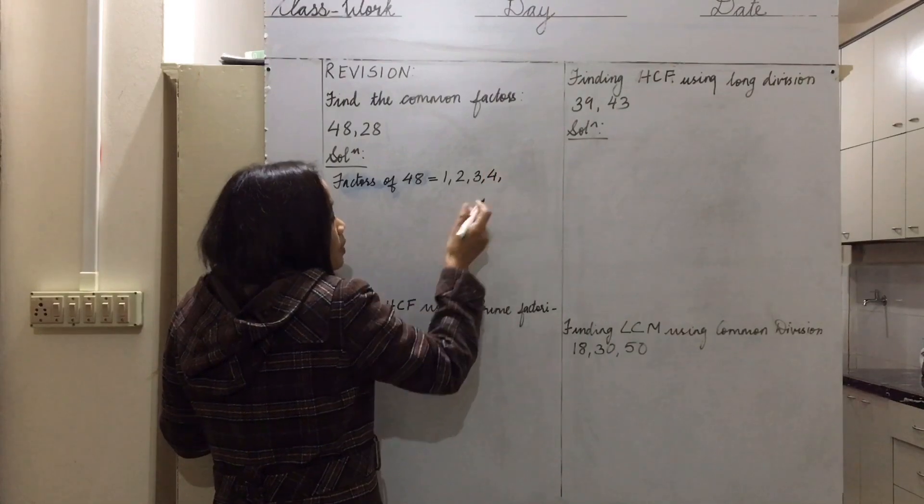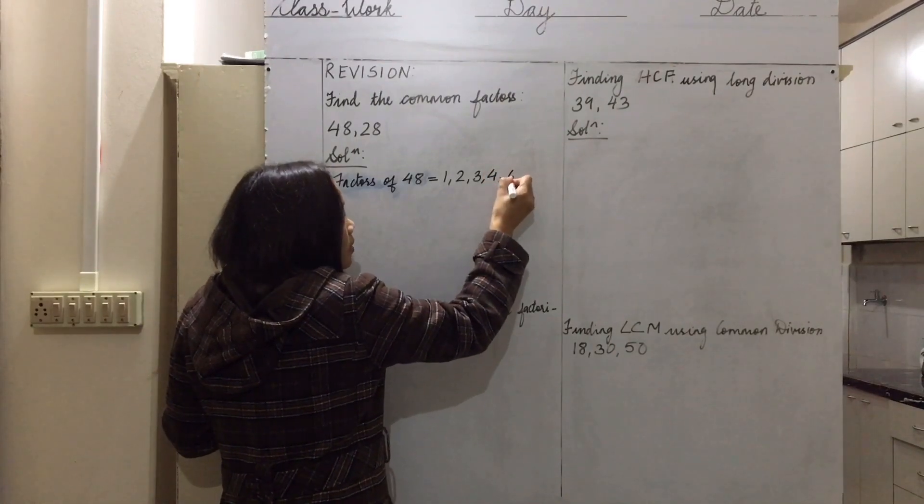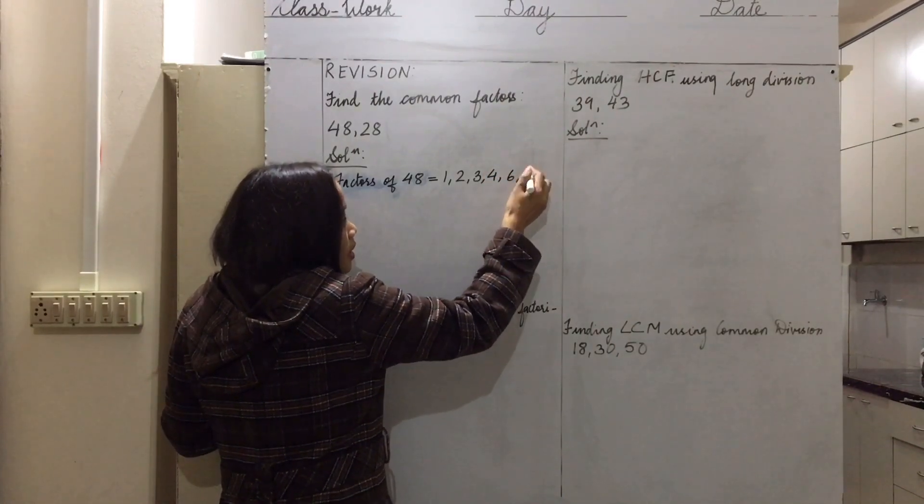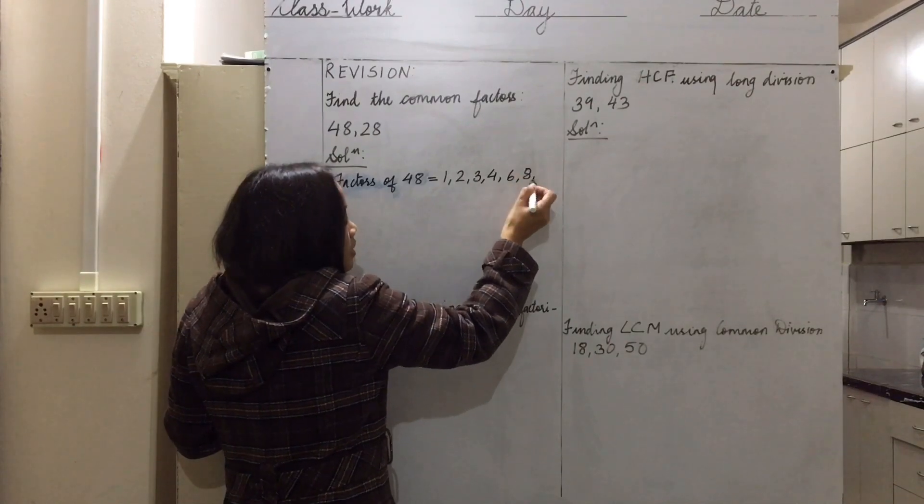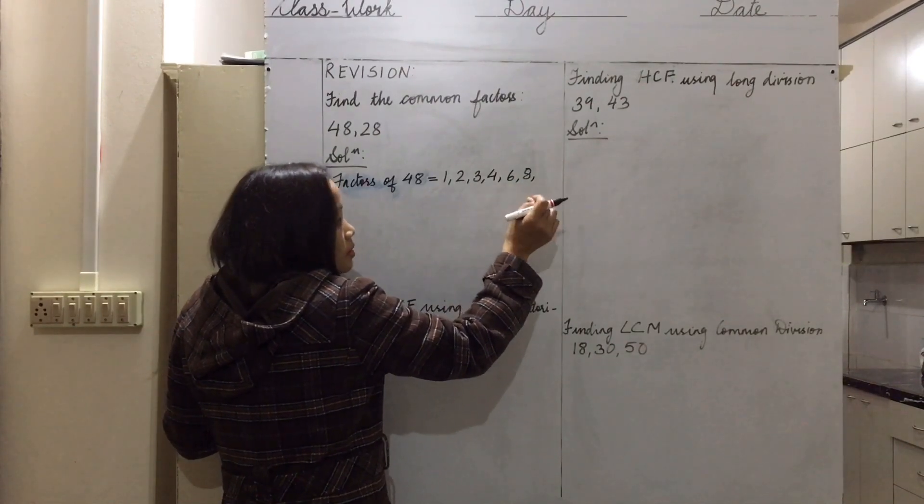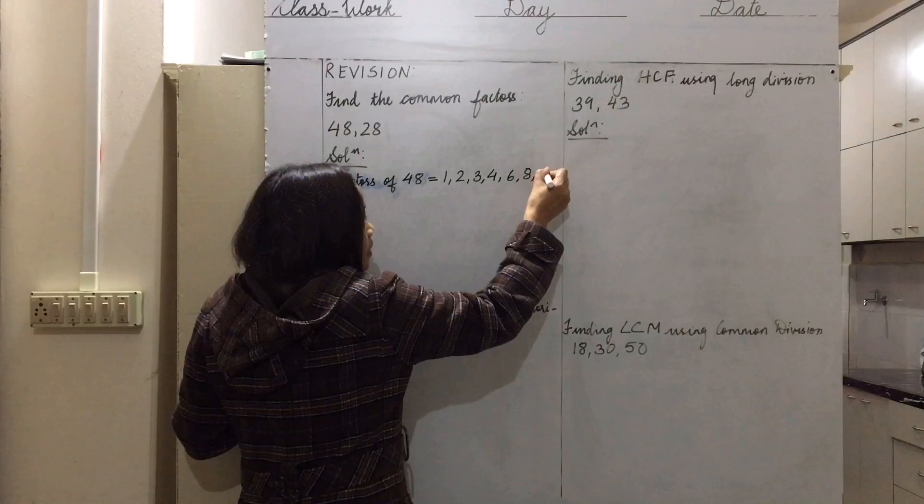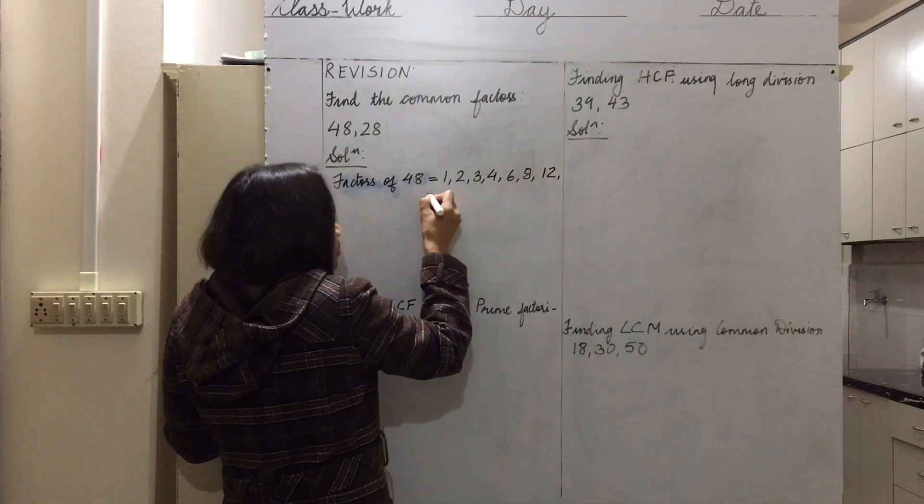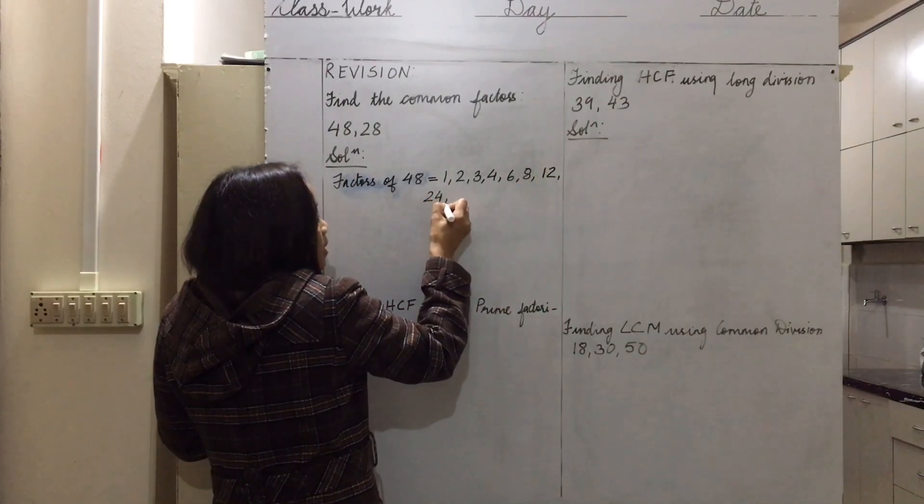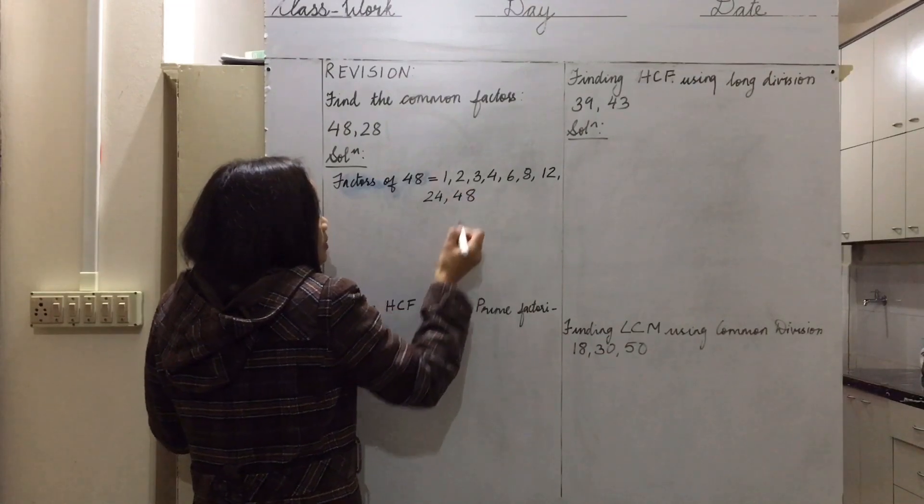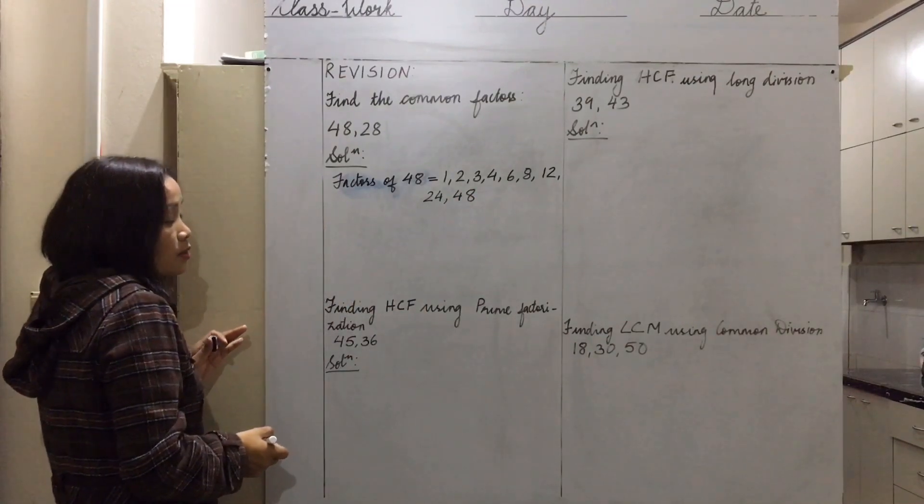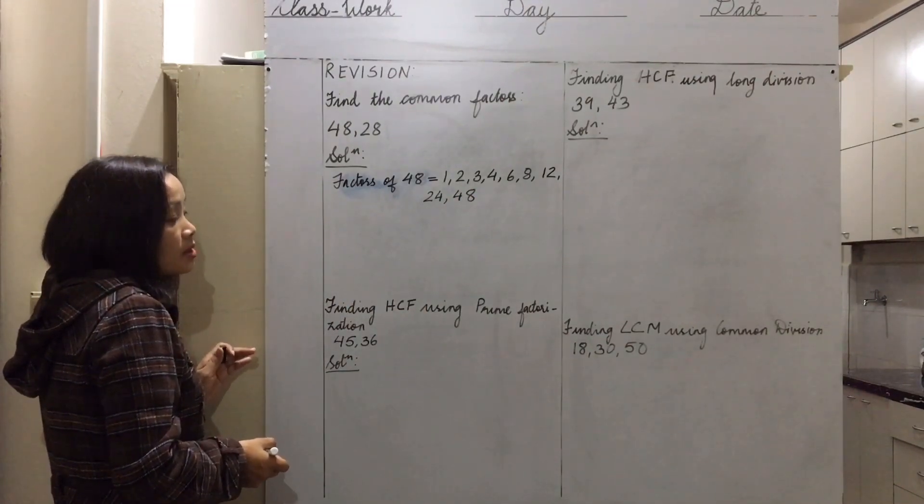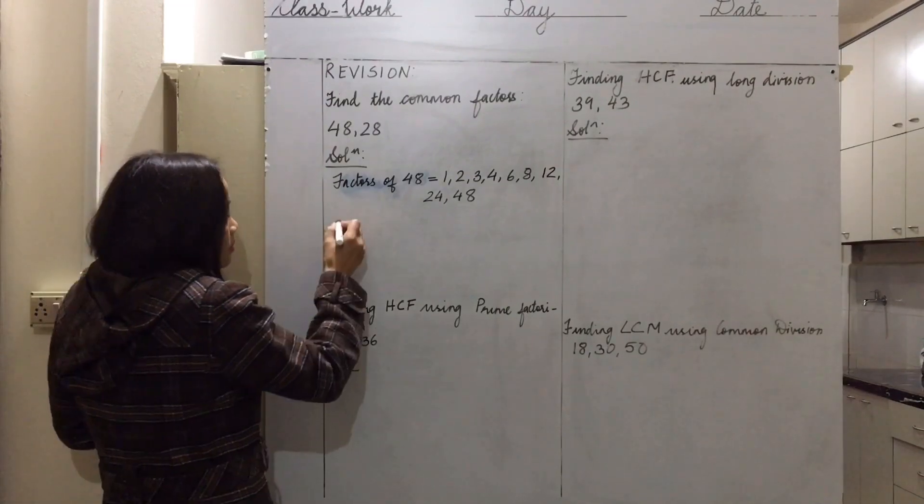What else? Six can divide, seven cannot, eight, nine cannot, ten cannot, eleven, twelve can divide. After this we have 24 and then 48. These are the factors of 48, numbers that can divide 48.